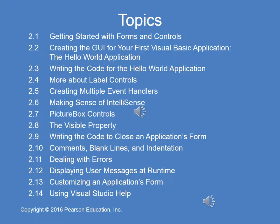This slide shows the topics covered in Chapter 2. For the purpose of this class, I take each chapter in the textbook and break it up into a two-week segment. In the first week for Chapter 2, we will cover sections 2.1 up to 2.5: getting started with forms and controls, creating the graphical user interface for your first application, the infamous Hello World application, writing the code for it, then label controls and multiple event handlers.